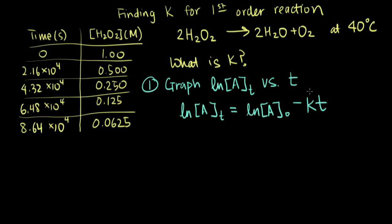So we can graph our data, we can take the natural log of this, graph it versus time, and then we know that the slope will give us minus K. And that's a perfectly fine way to solve this particular problem. But I would suggest, especially since we know that this particular reaction is a first-order reaction, we're going to solve this a slightly different way.